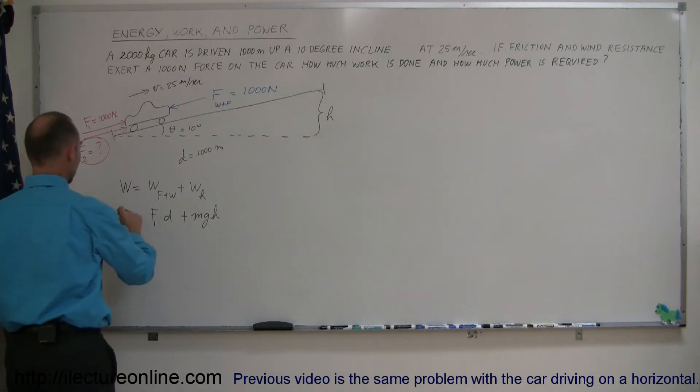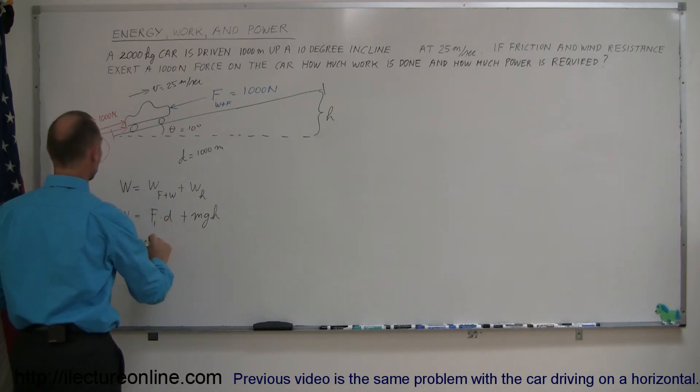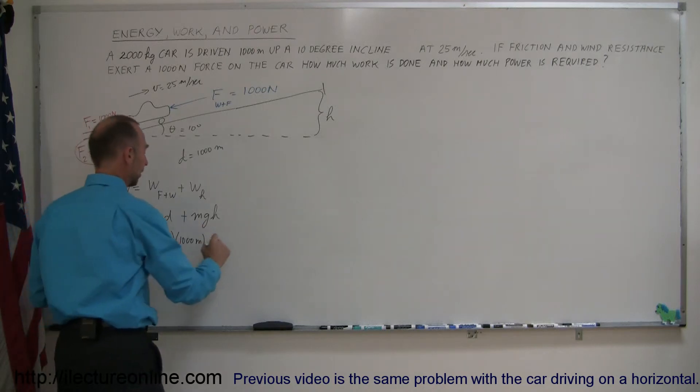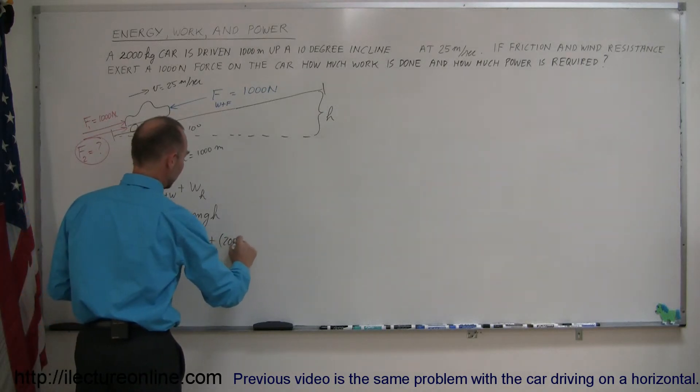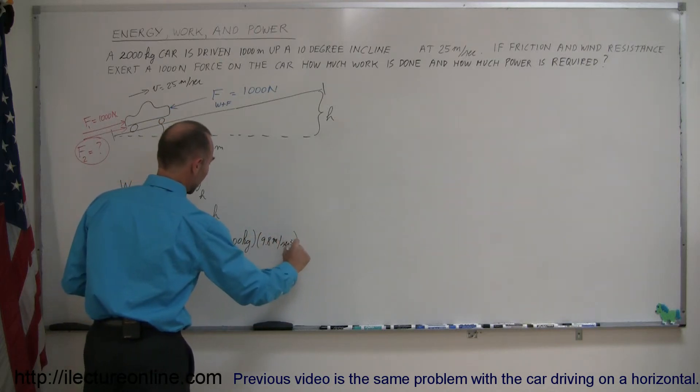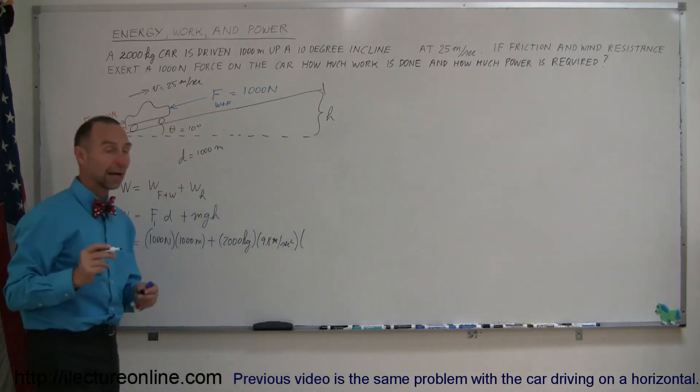So, in this case, the work done is equal to the force times the distance, and that would be 1,000 newtons times the distance of 1,000 meters plus the mass of the car, which is 2,000 kilograms, times G, which is 9.8 meters per second squared, times the height. Ooh, we don't know the height yet.